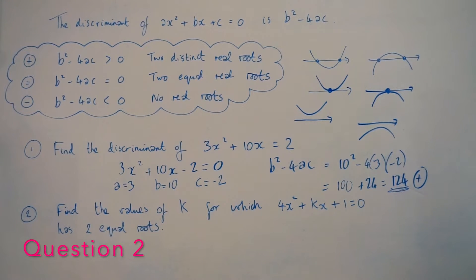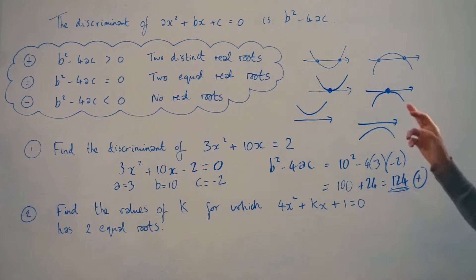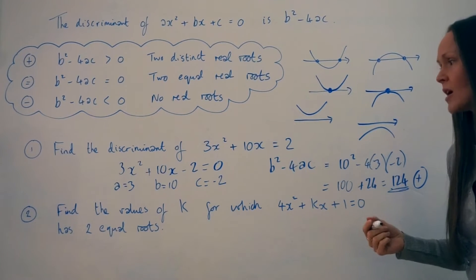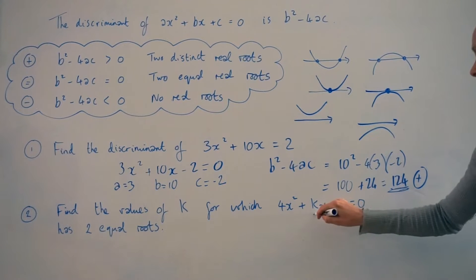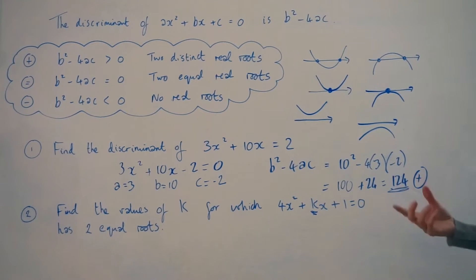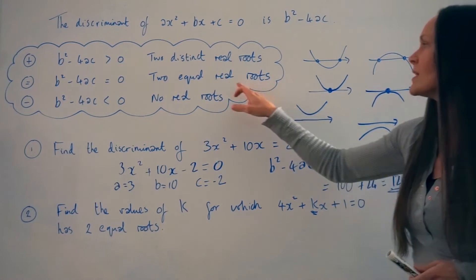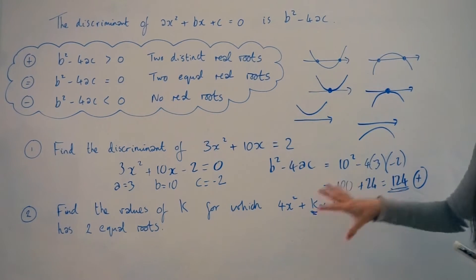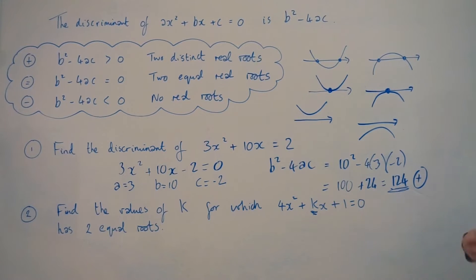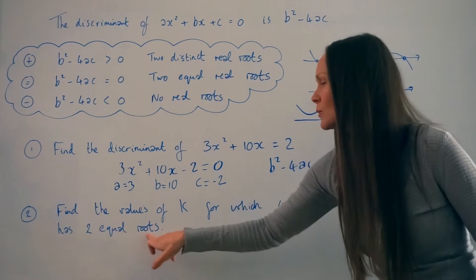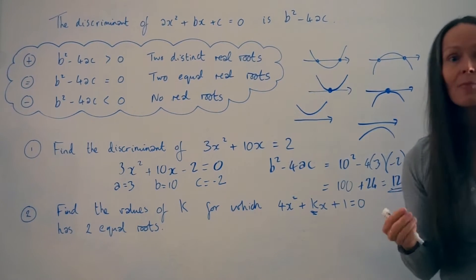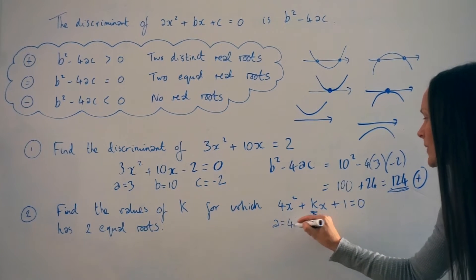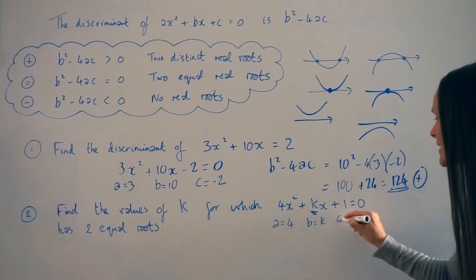In question 2, find the values of k for which 4x squared plus kx plus 1 equals 0 has two equal roots. We have to work out what k is. Because there are two equal roots, the discriminant has to equal zero. So let's work out the discriminant in terms of k and then set it equal to zero. First, identifying a, b and c: a is positive 4, b is positive k, and c is positive 1.